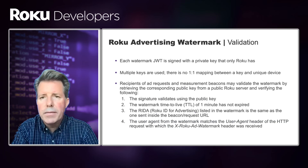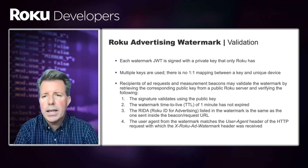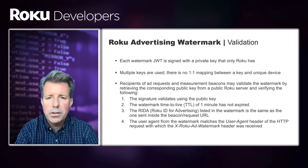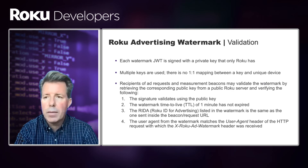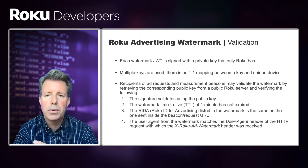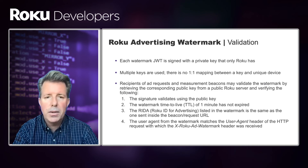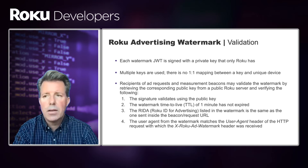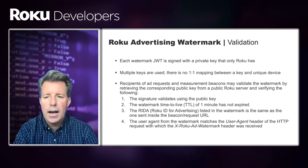How does one validate a Roku advertising watermark? Each watermark JWT is signed with a private key that only Roku has. Multiple keys are used, so there's no one-to-one mapping between a key and a specific Roku device. Recipients may validate the watermark by retrieving the corresponding public key from a public Roku server and verifying: (1) that the signature validates using the public key; (2) that the watermark time-to-live of one minute has not expired; (3) that the RIDA in the watermark matches the one in the beacon or ad request URL; and (4) that the user agent in the watermark matches the user agent in the HTTP request header.